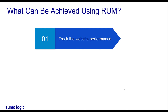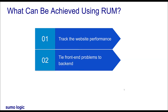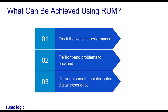XHR requests, console errors, and network latency, tie front-end problems to back-end troubleshooting data to automatically understand the full browser-to-database view of users' transactions, and deliver a smooth, uninterrupted digital experience.